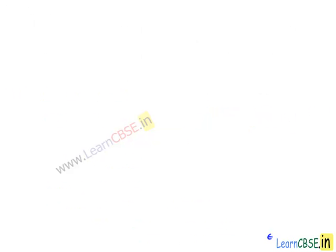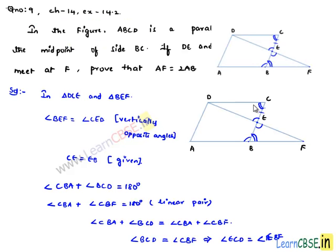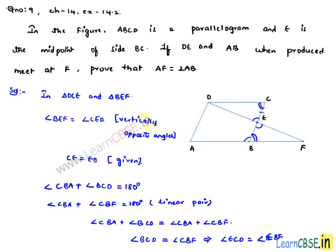Therefore, in both the triangles, two corresponding angles and one side are equal. Therefore, by ASA congruency property, we can say that two triangles are congruent. Here triangle DEC is congruent to triangle BEF. We know that when two triangles are congruent, then the corresponding angles and corresponding sides will be equal.